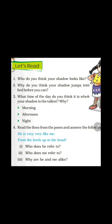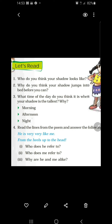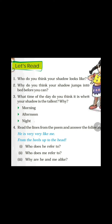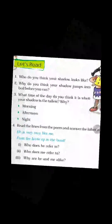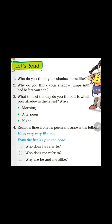Question number three: what time of the day do you think it is when your shadow is the tallest, and why? In the afternoon, when the sun is right above our head, our shadow is the smallest. Around 10 in the morning, when the sun is at our shoulder level, our shadow is very tall. At night there is no sun so there is no shadow, but if there is a light source behind us, the shadow will be tall. Since we are considering the sun, the answer is morning.